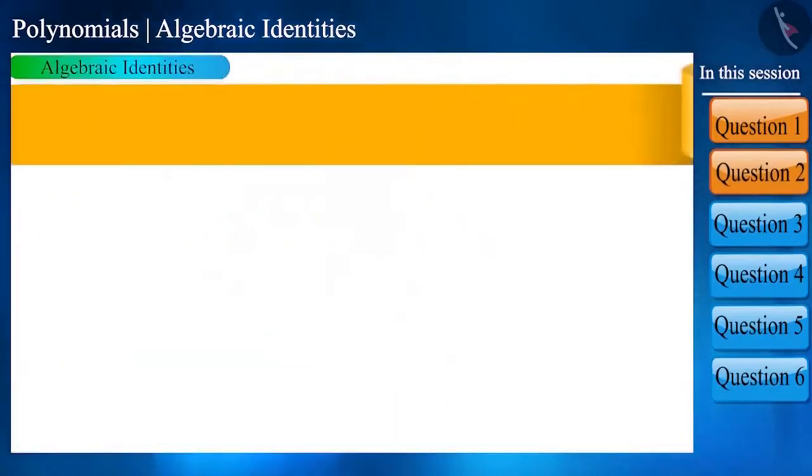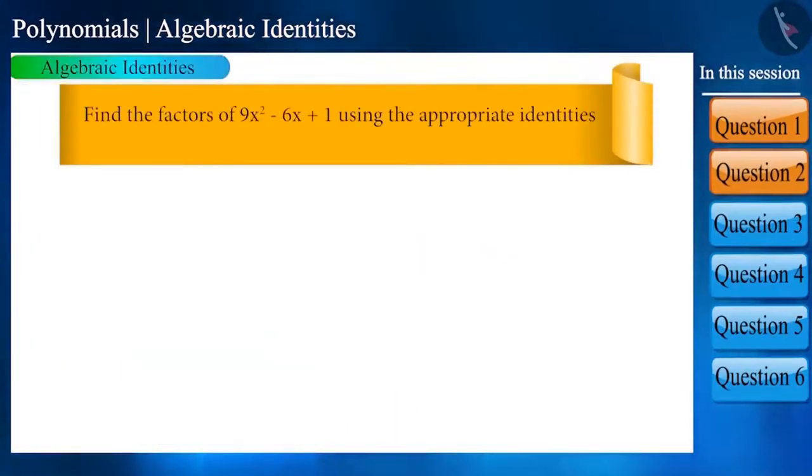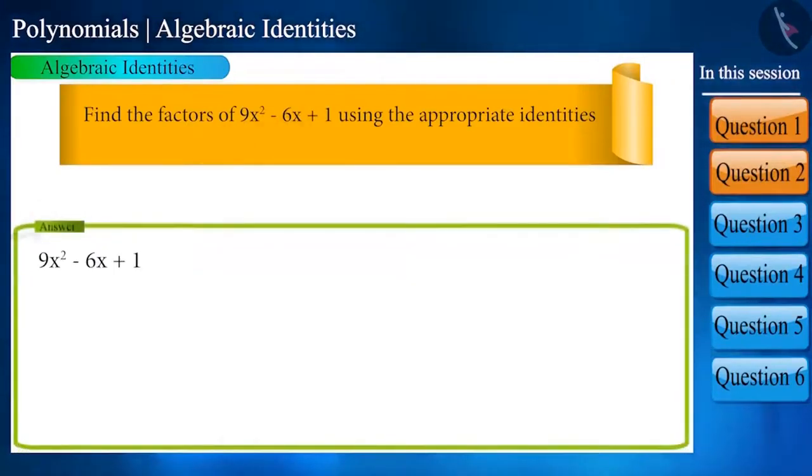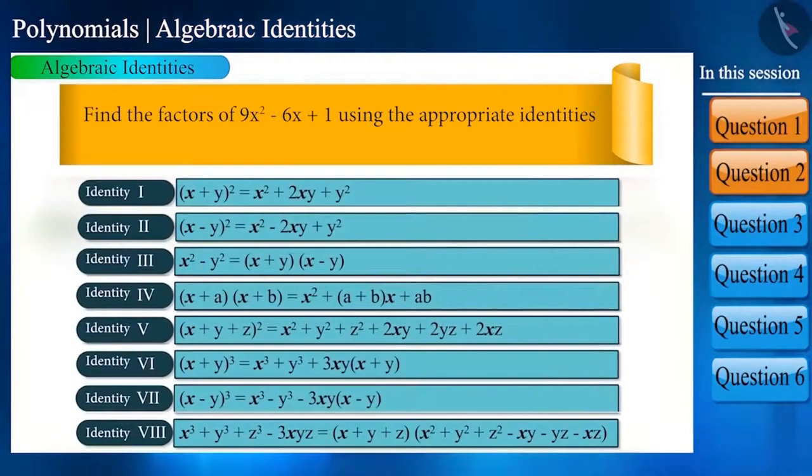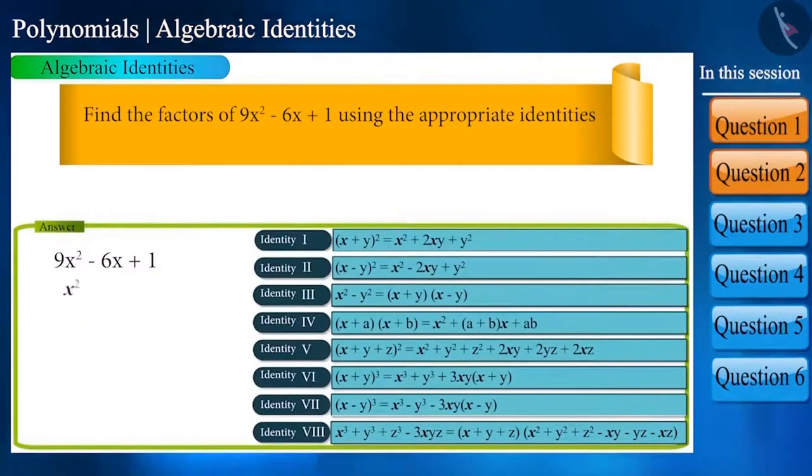Let's move to the next question: Find the factors of 9x square minus 6x plus 1 using the appropriate identities. Which identity does this look like? Can you answer? In such cases, pay attention only to the variable, that is x square minus x plus dash.